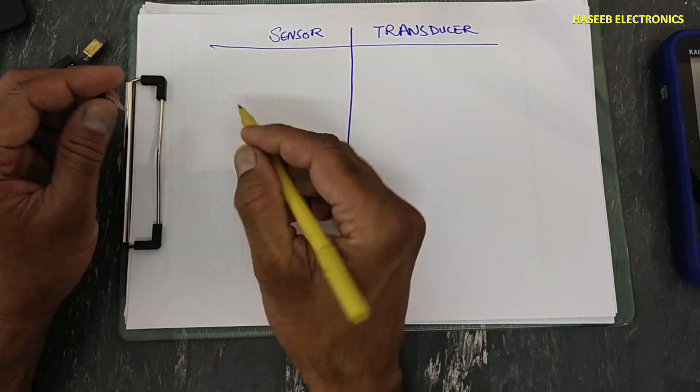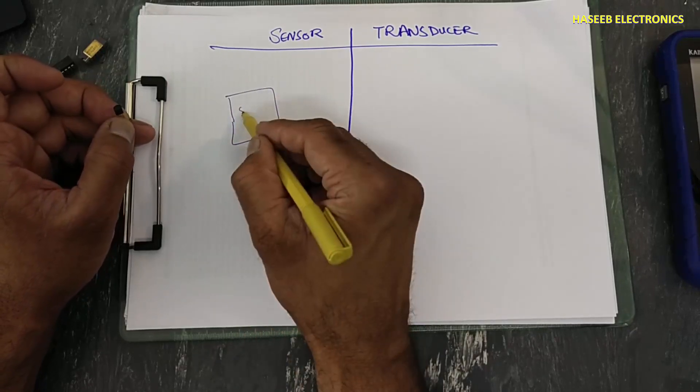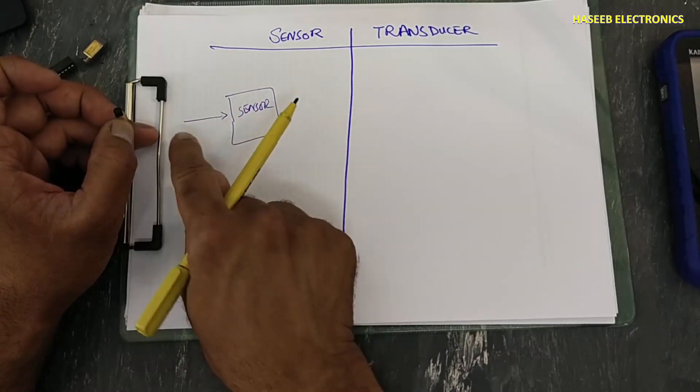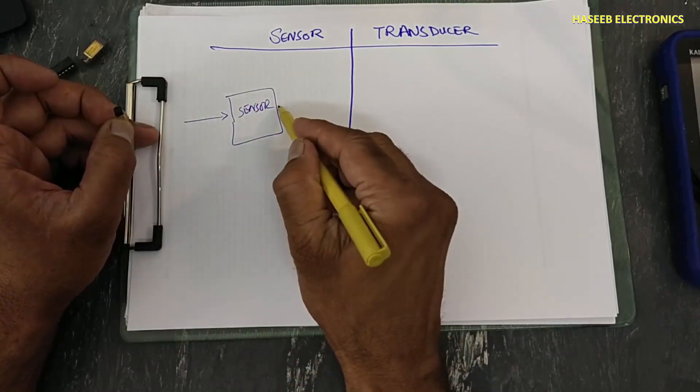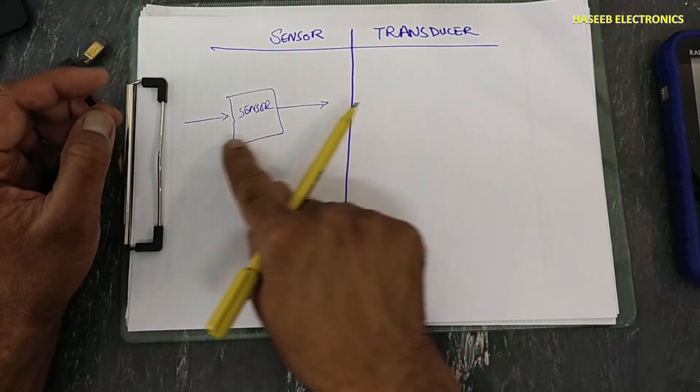For example, this is LM35 temperature sensor. It will receive heat energy and it will provide electrical signal. Its output will increase or decrease with change at input - high temperature more voltage, low temperature less voltage.